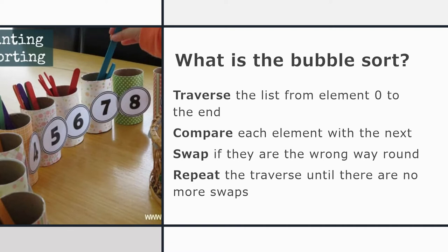Let me describe how the bubble sort works. The program traverses the list — that's a for loop that counts through every item in the list, from element zero to the end. At each stage, we compare each element with the next element in the list, and if they're the wrong way round — not in numerical or alphabetical order — then we swap them. However, going through the list once is not enough. We repeat that traversal over and over again until we get right through the list with no more swaps. At that point the list is fully sorted.